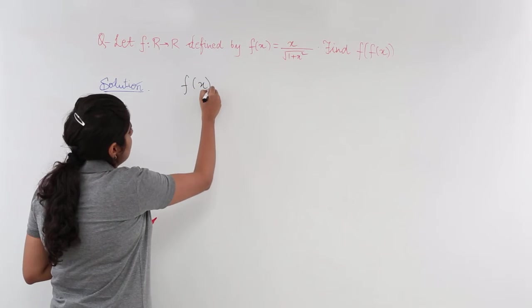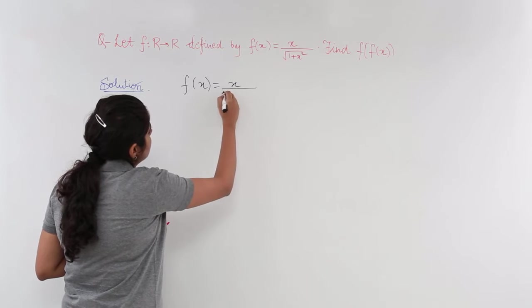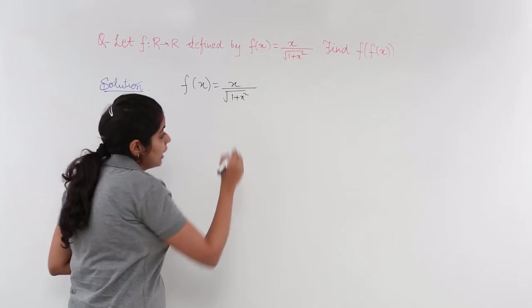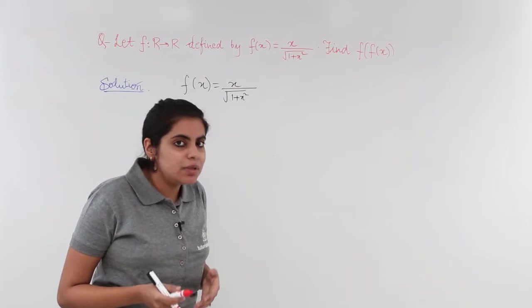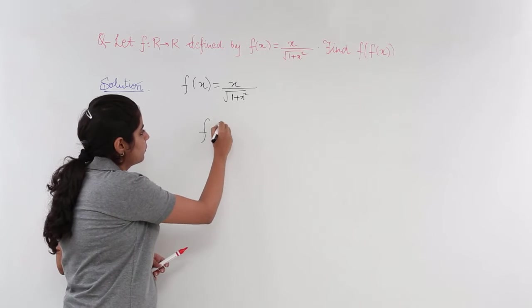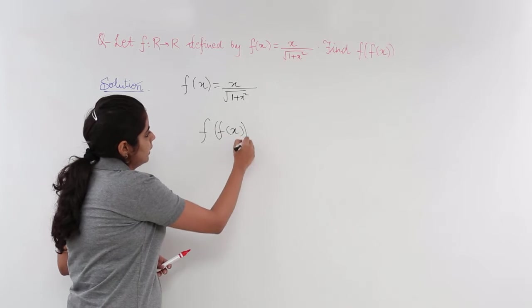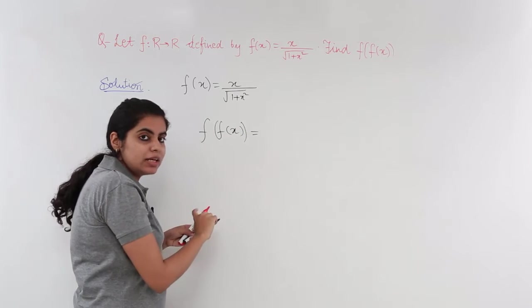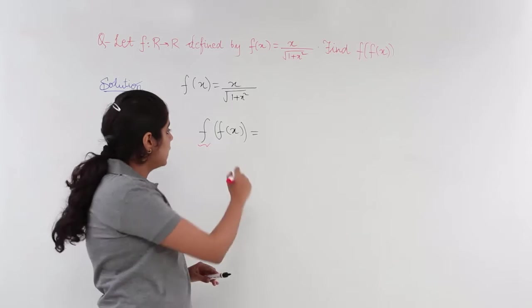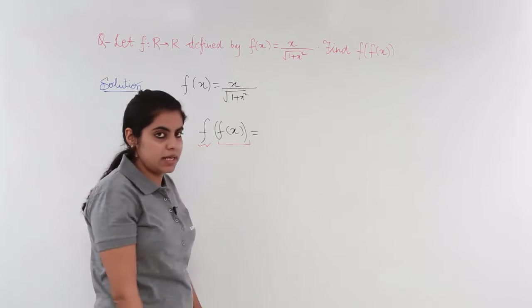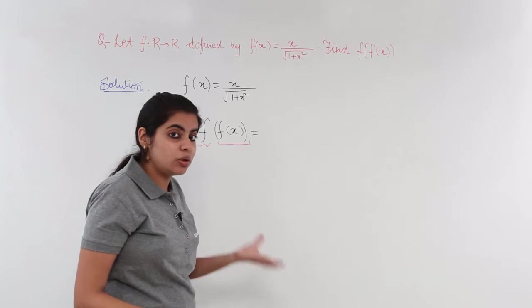fx is given to me as x upon under root 1 plus x square. f of f of x means what? It means that we have to write down in this manner. Firstly, we have this f which is to be ignored for now. Then we have f of x. Now, what is the value of f of x?